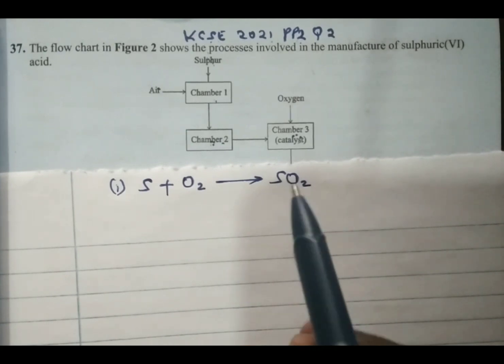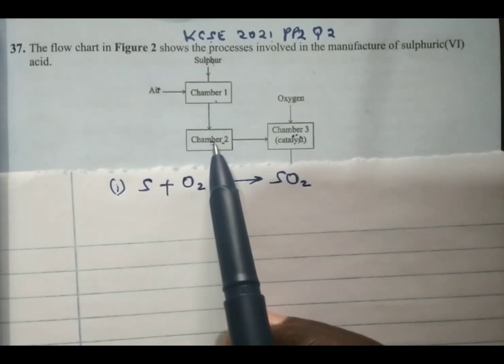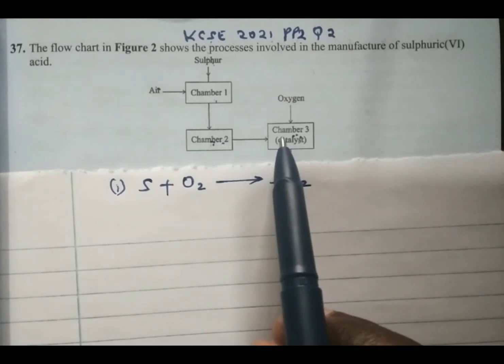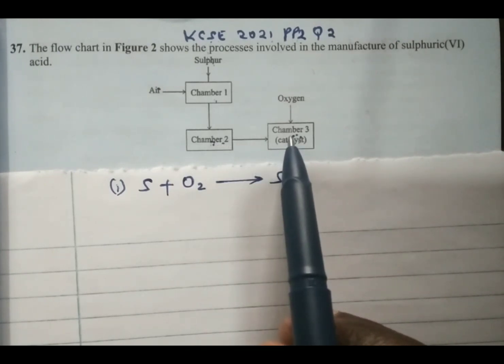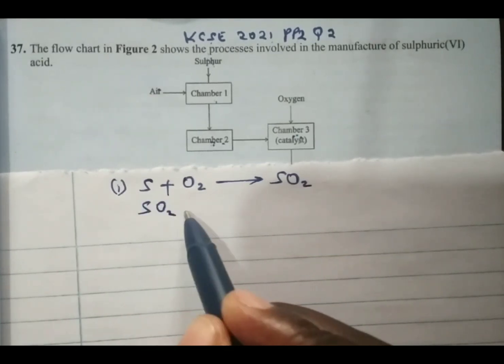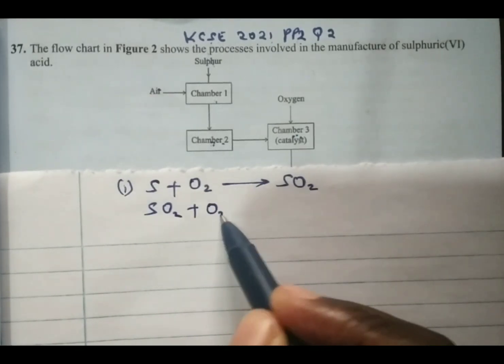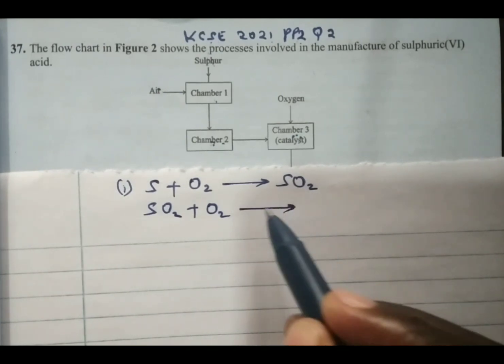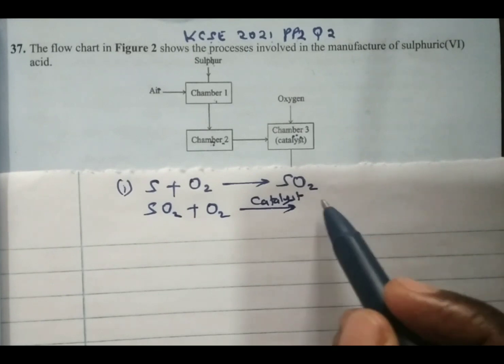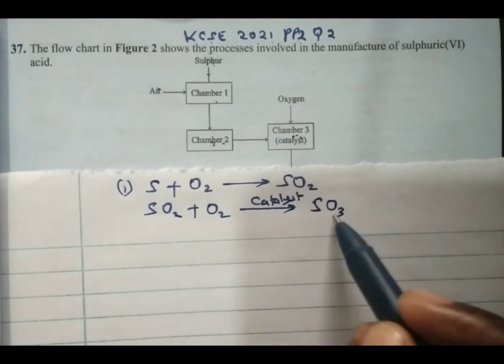Then sulfur dioxide comes to chamber 2 where it is purified and passed to the catalytic chamber where sulfur dioxide is reacted with more air in the presence of a catalyst to give us sulfur trioxide.